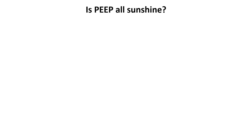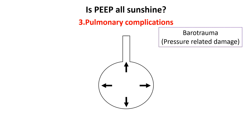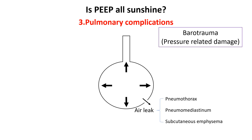Excessive PEEP can have several pulmonary complications including barotrauma, volutrauma, impaired carbon dioxide clearance, and ventilation-perfusion mismatch. High PEEP can cause overdistension of the alveoli, leading to increased pressure within the lungs. This elevated pressure can result in air leaks where air escapes into areas outside the lung tissue. The potential consequences include pneumothorax, where air leaks into the pleural space and causes lung collapse; pneumomediastinum, where air collects in the mediastinum; and subcutaneous emphysema, where air escapes under the skin, often appearing around the neck and chest.